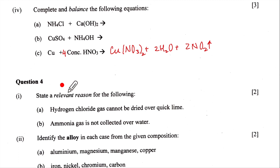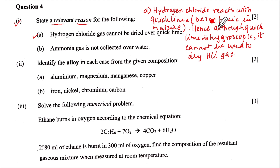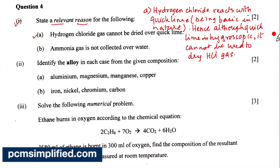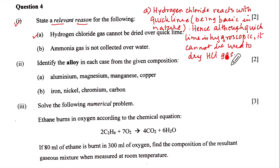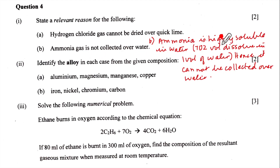The first 10 marks are done. Question 4, part one: state a relevant reason for the following. A — Hydrogen chloride gas cannot be dried over quicklime because HCl reacts with quicklime, which is basic in nature. Although quicklime is hygroscopic, it cannot be used to dry HCl gas. B — Ammonia gas is not collected over water because ammonia is highly soluble in water (702 volumes dissolve in one volume of water), hence it cannot be collected over water.